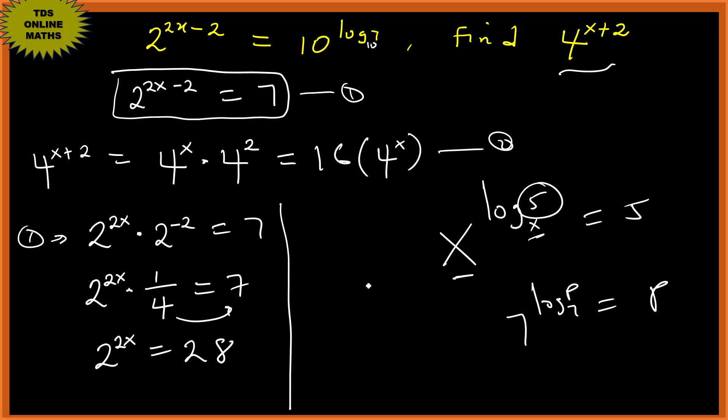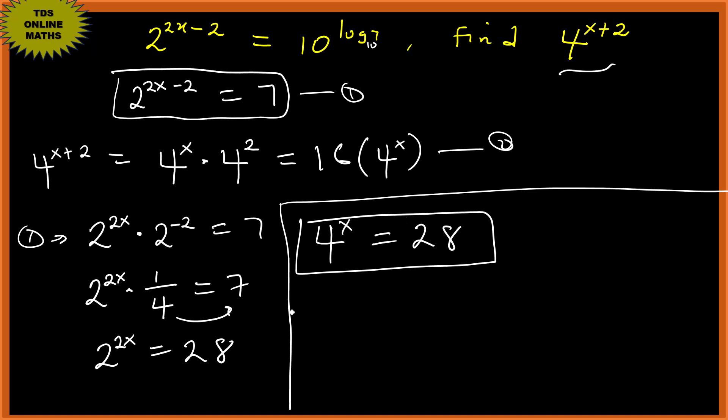7 times 4 is 28. So we can rewrite this as 4 to the power x, because 2 to the power 2x equals 28, so it means 4 to the power x is 28.